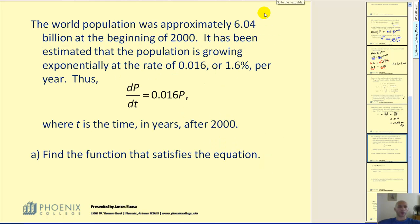Let's take a look at one more example. The world population was approximately 6.04 billion at the beginning of 2000. It has been estimated that the population is growing exponentially at the rate of 0.016 or 1.6% per year.